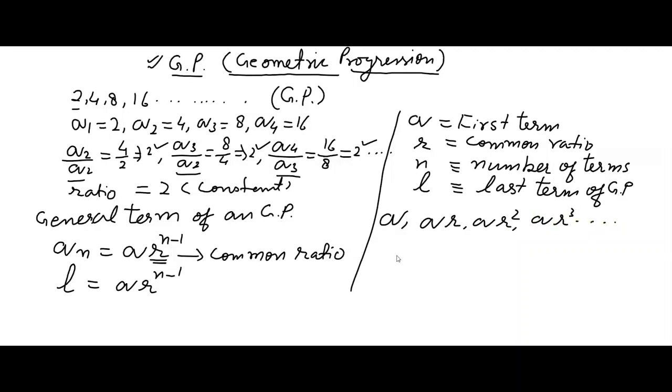And sum of n terms of GP may be calculated as A times R raised to the power n minus 1 upon R minus 1.